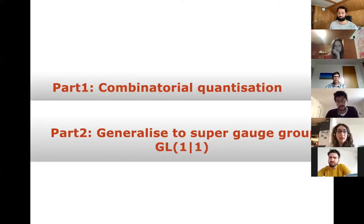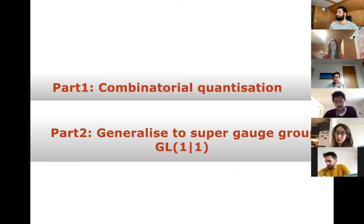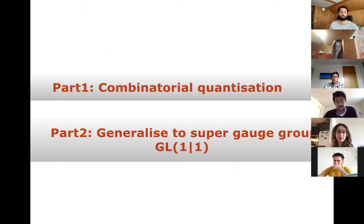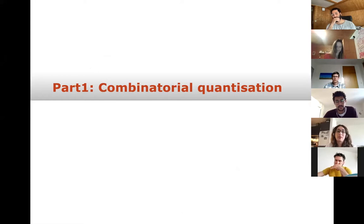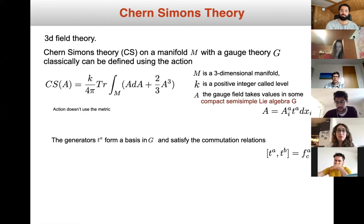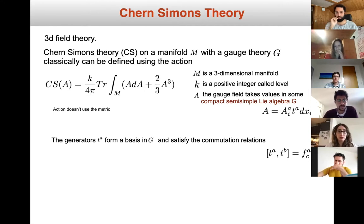Let me outline the contents. I plan to talk about combinatorial quantization — what it is — and very briefly at the end, I'll hopefully find time to tell you how we can generalize this approach to the super group, particularly for the group GL(1|1). Let me start with the explanation of combinatorial quantization. Before that, I'll give a short introduction to Chern-Simons theory so we can all be on the same page.